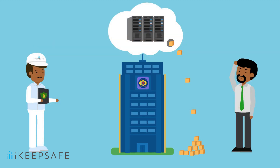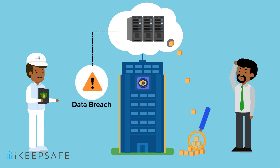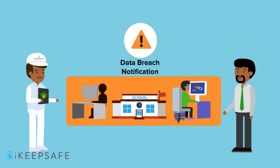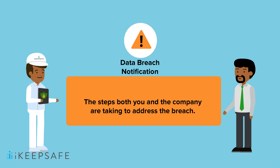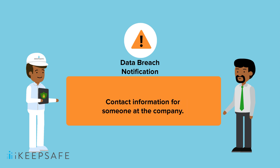So you might be wondering what happens when information is leaked. When any unauthorized party has been provided access to data, this is called a data breach. Whether a breach is the result of a malicious hacker, a mistake by the school, or a mistake by the company, your response must be the same. You must notify all affected parties about the breach, including a general description of the breach, the date of the breach, what information was compromised, the steps both you and the company are taking to address the breach, and contact information for someone at the company.